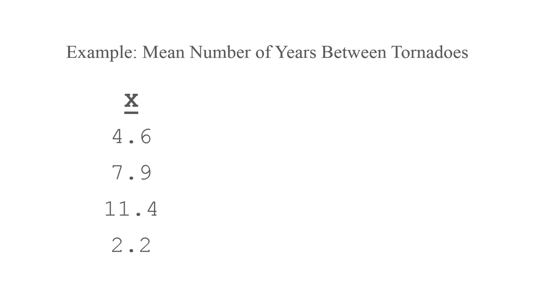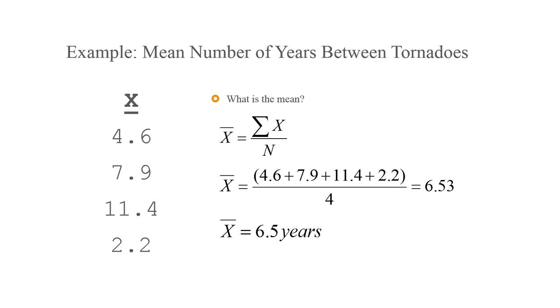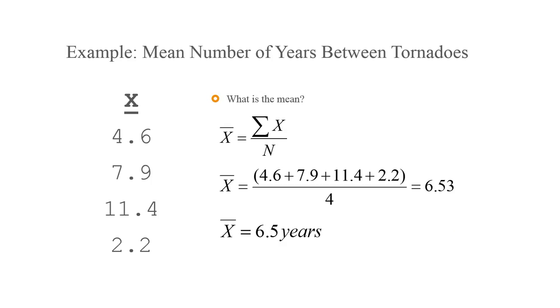Here's an example. The mean number of years between tornadoes for four different trailer parks. What's the mean? The mean is the sum of x over n. So you add up all the x values: 4.6, 7.9, 11.4, 2.2. You divide by 4, equals 6.53. Really easy. You guys know how to do this. So that's the mean. The end.